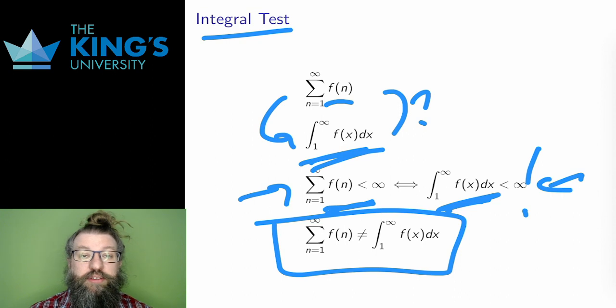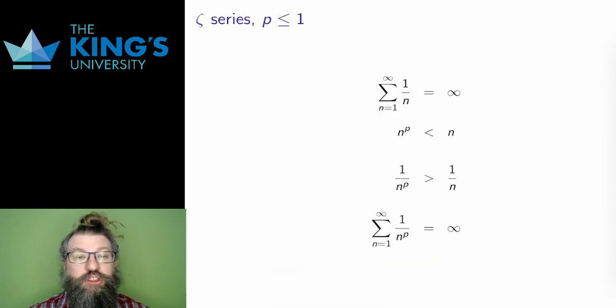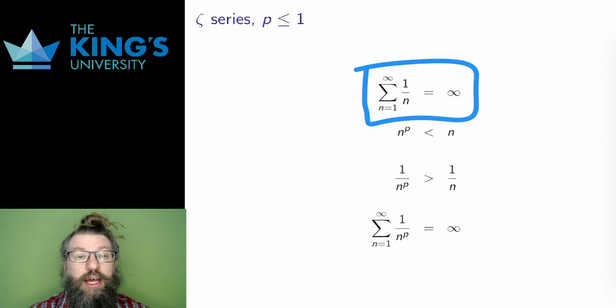This lets me talk about zeta series again. The convergence criteria for zeta series is p greater than 1, but why is this so? Well, I can use some of the other tests to figure out why this is the case. I know that the harmonic series diverges. I proved that directly using the definition last week. So I can rely on that fact.